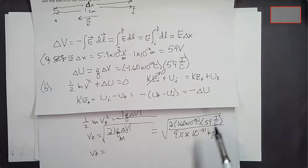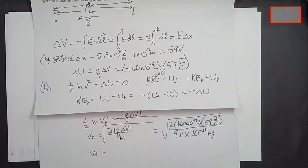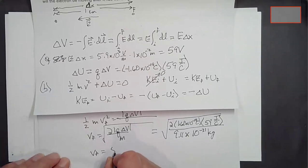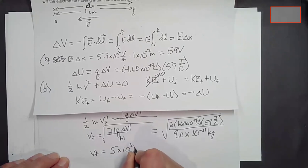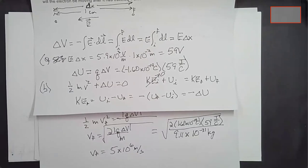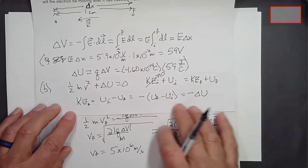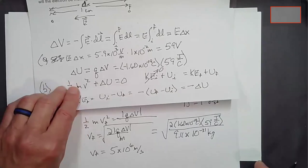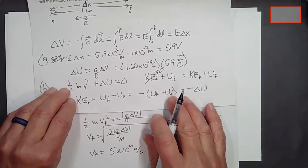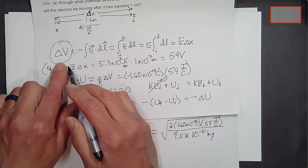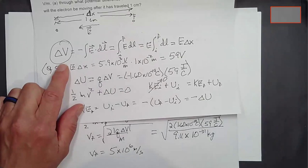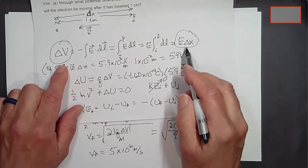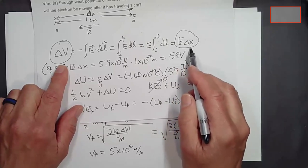We don't have many significant figures here — just one centimeter — so to one significant figure I get about 5 times 10 to the sixth meters per second. That's a little more than one percent the speed of light, so we can get away with not worrying about special relativity to one significant figure. The big idea: for a uniform electric field moving along its direction, the potential difference just equals E times however far you move.